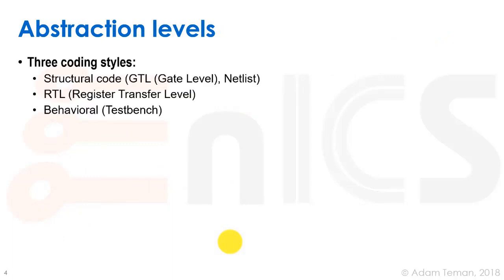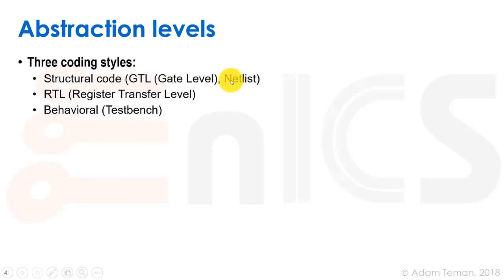Verilog has three coding styles, or three abstraction levels. The first and most low-level one is what we call structural code — also called gate level, net list, or GTL. It's just a list of gates and the connectivity between them: what types of nets connect the different ports or pins on these gates and how they're connected. It's not very readable — we just have a list of gates and connections, and it becomes very hard to understand once we have a lot of gates.